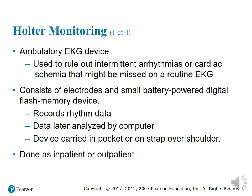Ambulatory EKG — a device used to rule out intermittent arrhythmias or cardiac ischemia that might be missed on a routine EKG. It consists of electrodes and a small battery-powered digital flash memory device. The device records rhythm data that is later analyzed by a computer. It can be carried in a pack or worn on a strap over the shoulder and can be done as an inpatient or outpatient. If they take it home, they wear it for the required time frame, data is collected into the computer, and a determination is made from the average.